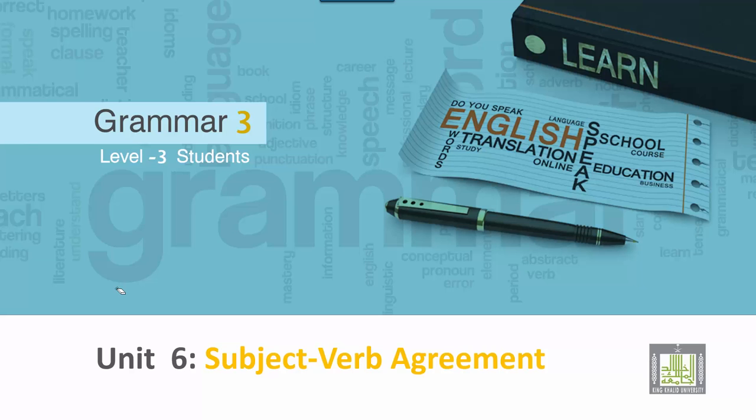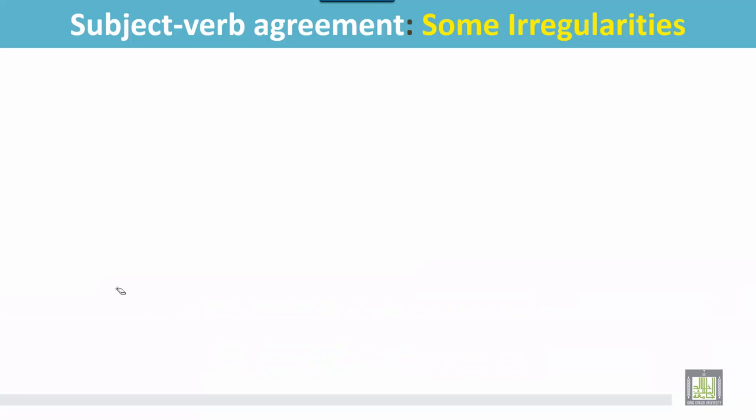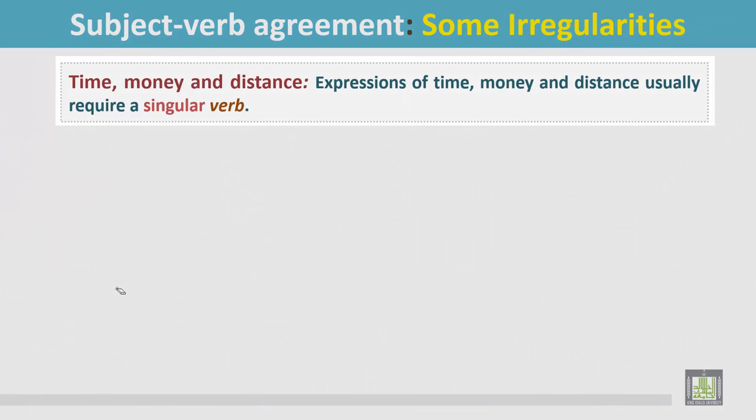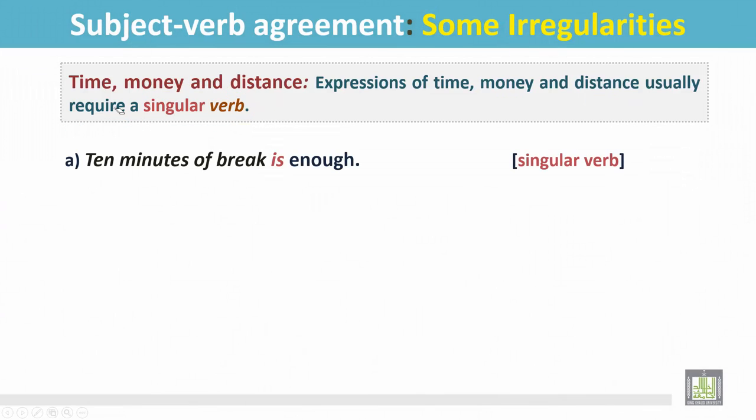Grammar 3 for level 3 students. Unit 6: Subject-Verb Agreement. Subject-verb agreement, some irregularities. Time, money and distance: expressions of time, money and distance usually require a singular verb.